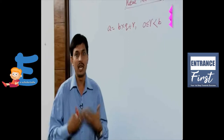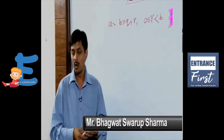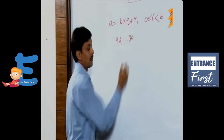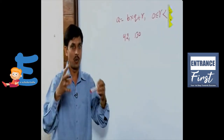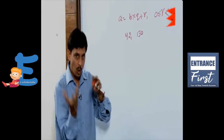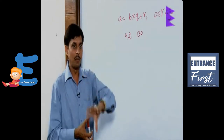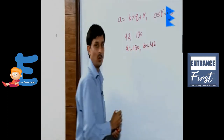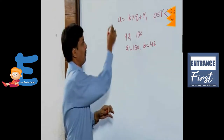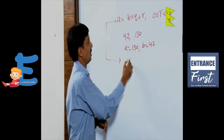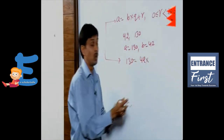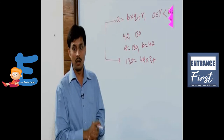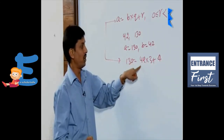For example, suppose we want to find the HCF of 42 and 130 using the concept of the division algorithm. We will say A equals 130 and B equals 42, and we express this with the equation. So 130 equals 42 into 3, and the remainder coming out is 4. That is: 130 equals 42 into 3 plus 4.